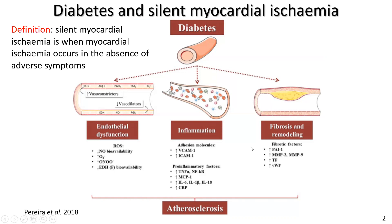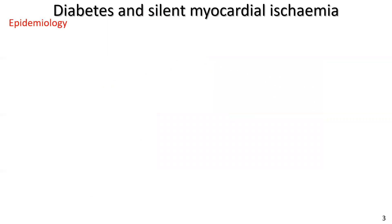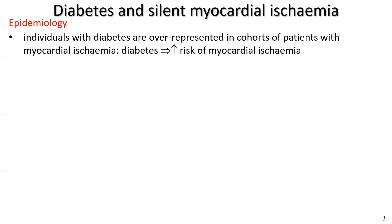Silent myocardial ischemia — to revise from part one — is when myocardial ischemia occurs in the absence of adverse symptoms. Regarding the epidemiology of the links between diabetes and silent myocardial ischemia: individuals with diabetes are overrepresented in studies of patients with myocardial ischemia. A cardiologist once told me that a large percentage of patients in a diabetes outpatient clinic have coronary artery disease, and a large percentage of patients in a coronary care unit have hyperglycemia, glucose intolerance, or diabetes.